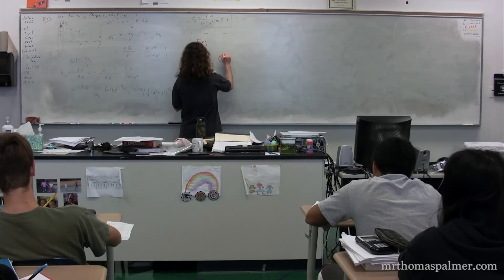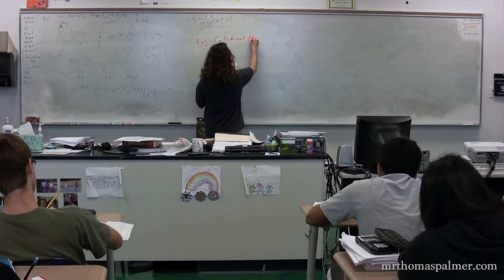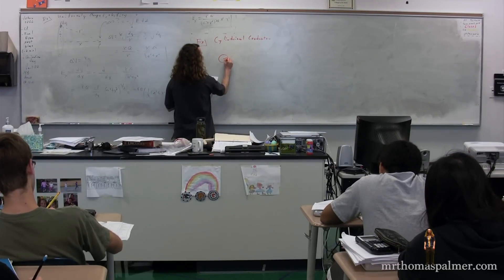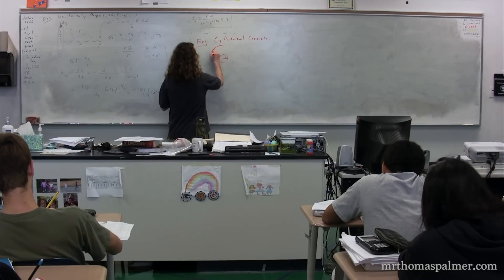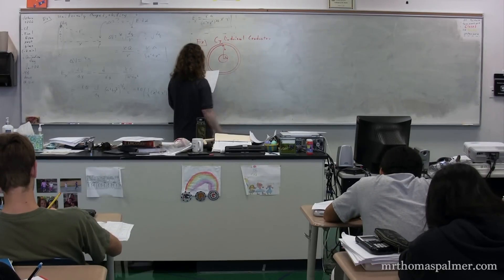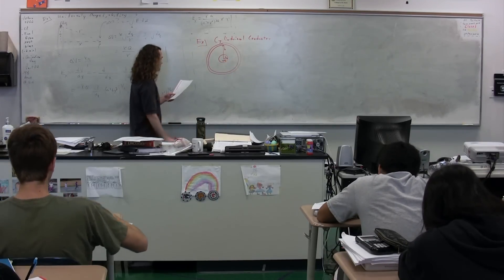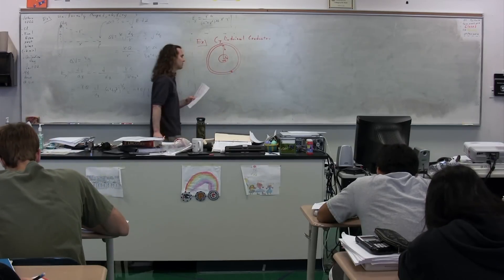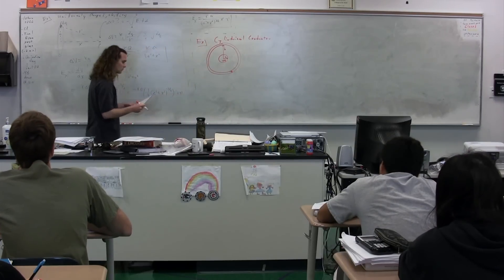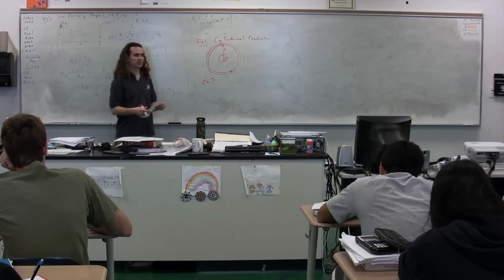We have a cylindrical conductor. On the inside, we have a cylinder with radius A. On the outside, we have a thin cylindrical shell with a radius B. We have a positive charge on the inner cylinder and a negative charge, negative Q, on the outer thin cylindrical shell. We have a long cylinder running this way, and our goal is to figure out the capacitance of this cylindrical conductor.